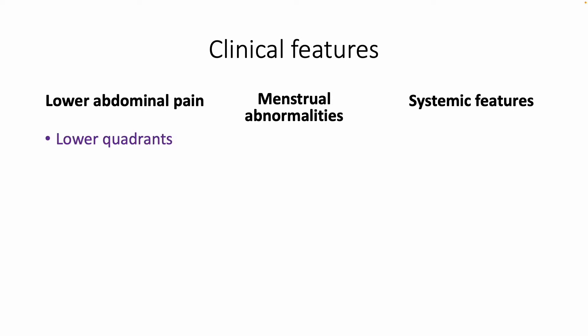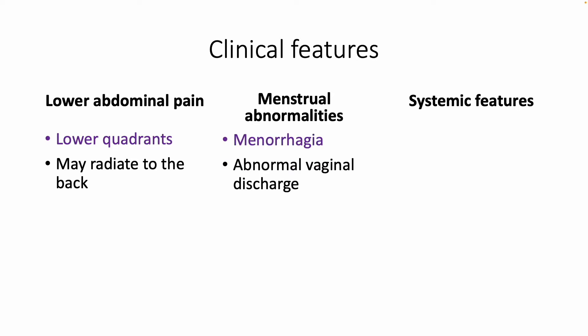The abdominal pain is in the lower quadrants and it can radiate to the back. Some of the menstrual abnormalities patients will complain of are menorrhagia, abnormal vaginal discharge, and intermenstrual bleeding.